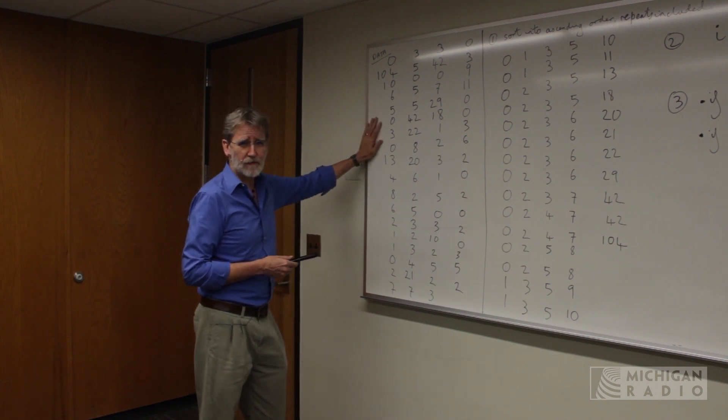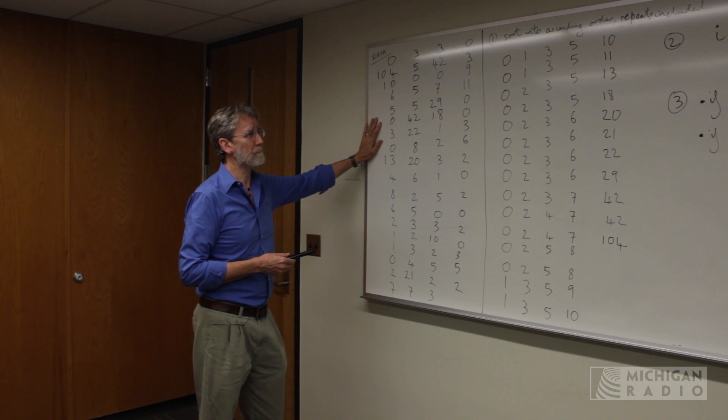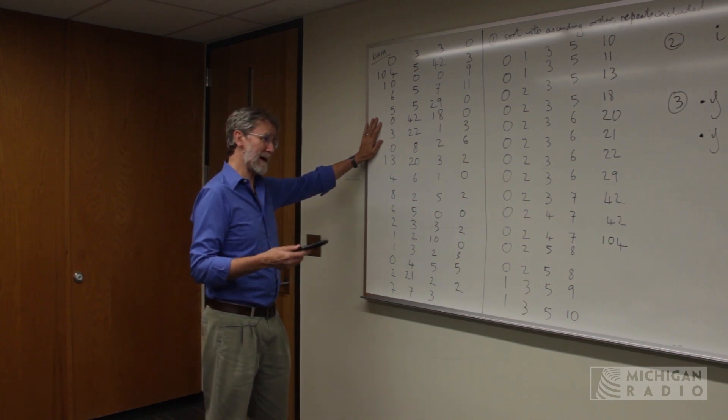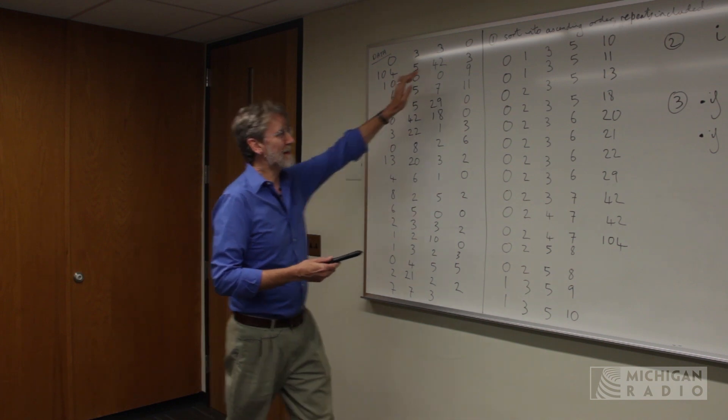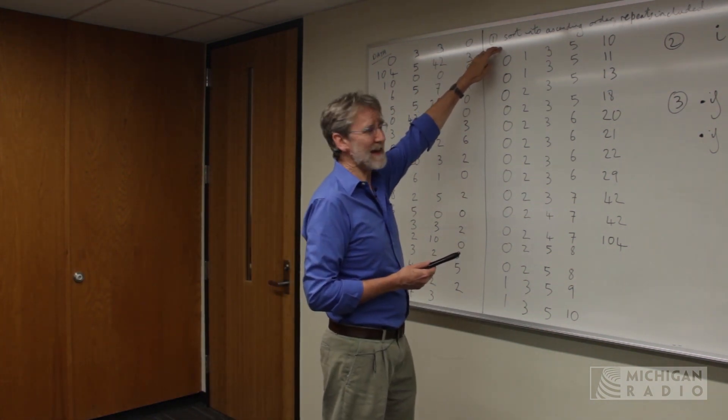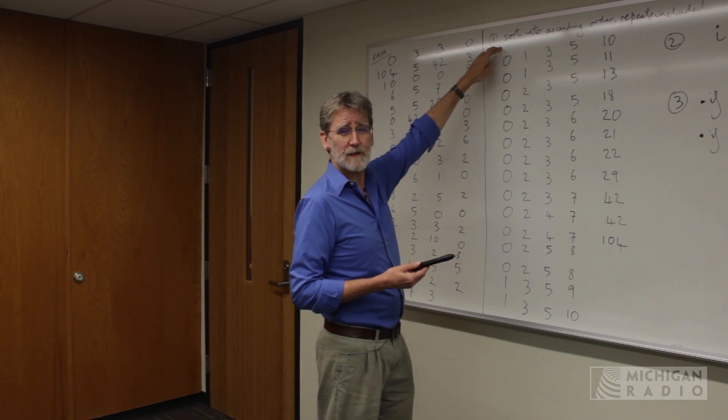What we're trying to do is find the 90th percentile. And so step one is simple, but it takes you a long time. Step one is you sort the numbers into ascending order with repeats included.